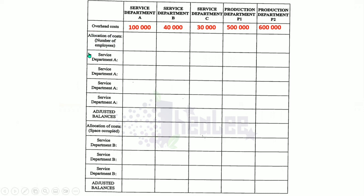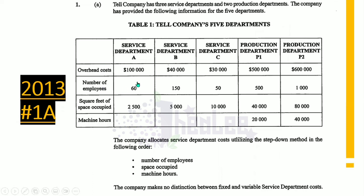Now that we have our overhead costs, we can proceed to allocate the service department costs. We begin by allocating based on number of employees, starting with service department A as indicated on the worksheet. We enter $100,000 in brackets to show we are reducing that department. We ignore the 60 employees in department A, as we do not allocate service costs back to the same department.